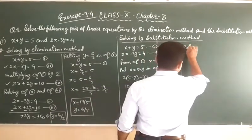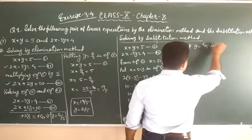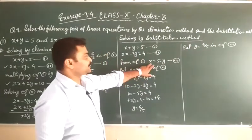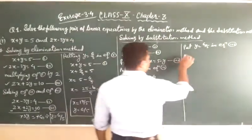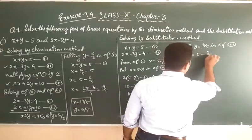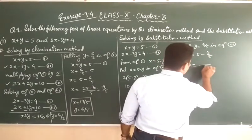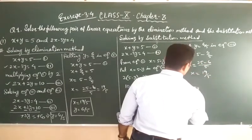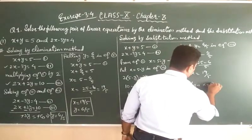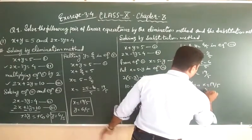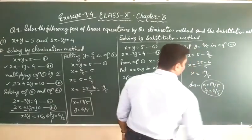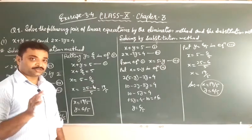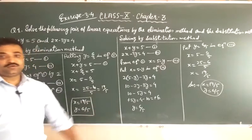Now put y equal to 6 upon 5 in equation 3. Equation 3 is x is equal to 5 minus y, so x is equal to 5 minus 6 upon 5. Taking LCM: 25 minus 6 upon 5, that is x is equal to 19 upon 5. So our answer is x is equal to 19 upon 5 and y is equal to 6 upon 5. In this way we have to solve all 4 parts of question number 1. Pause the video to note it down.